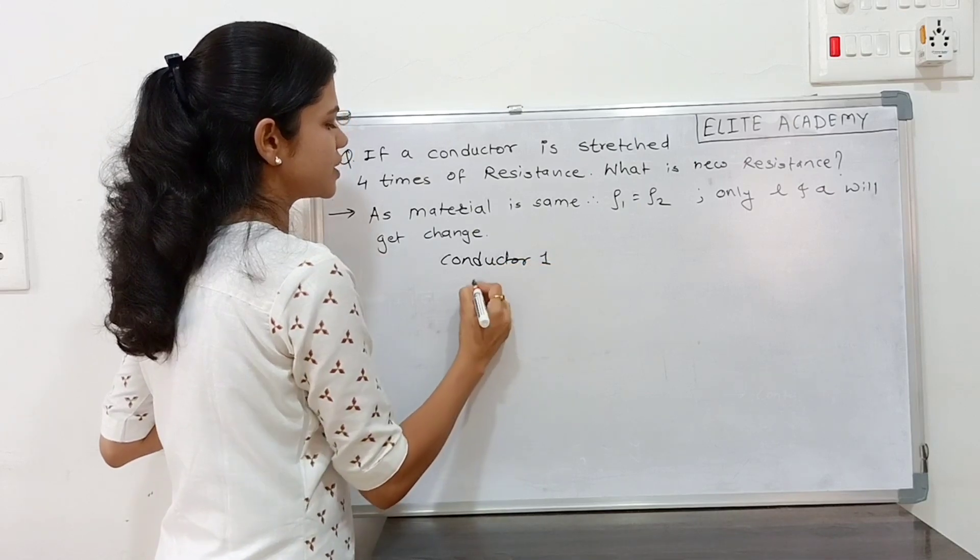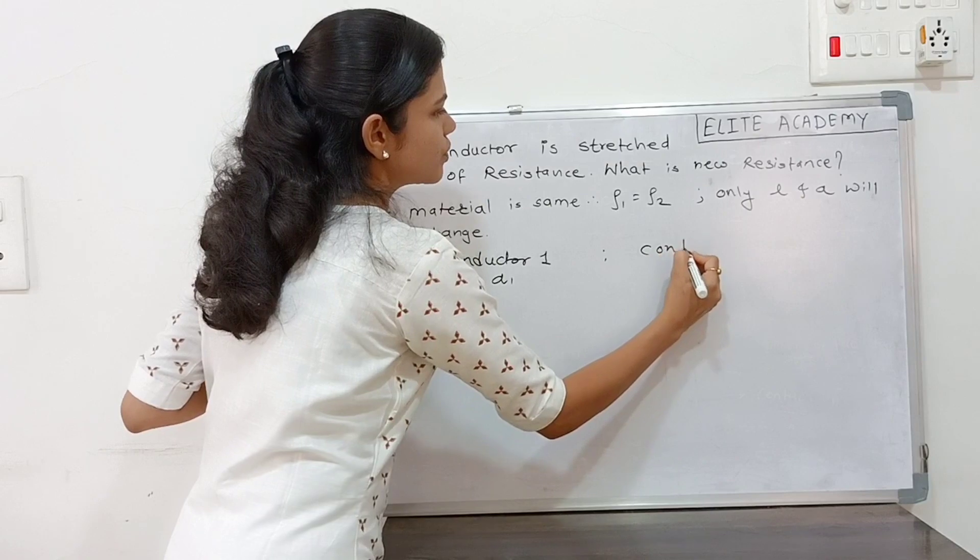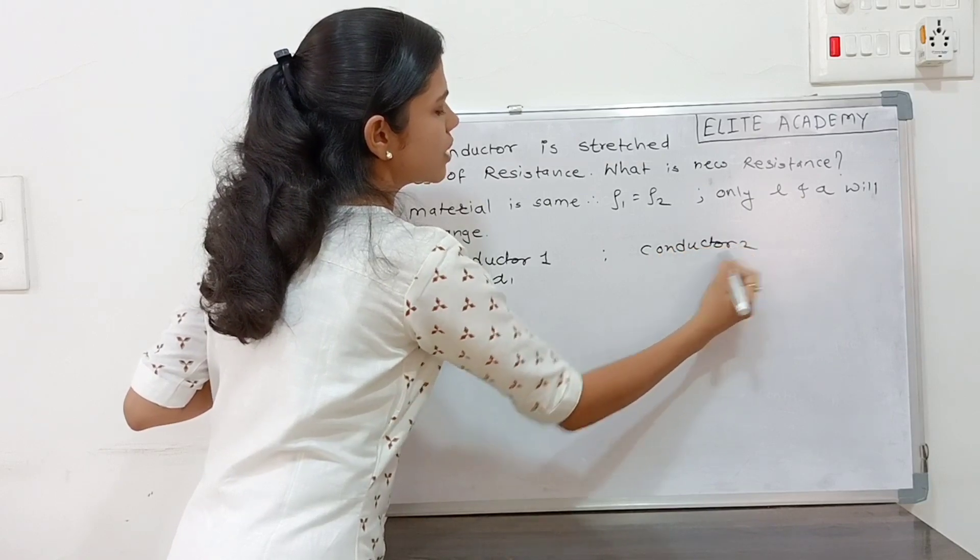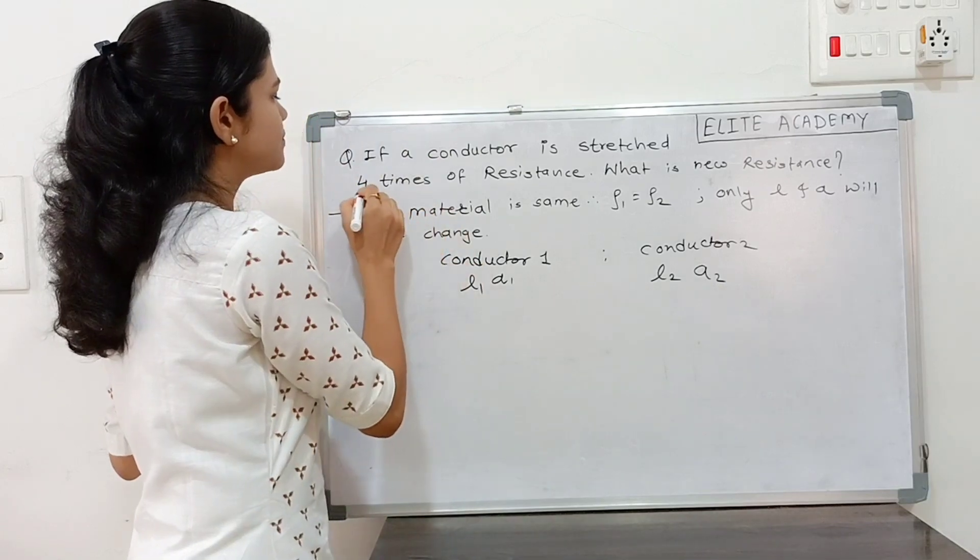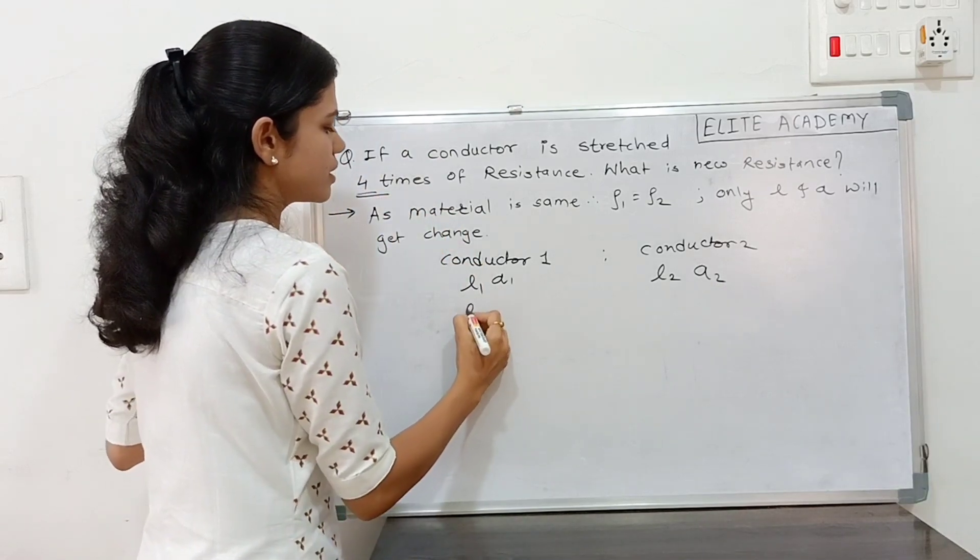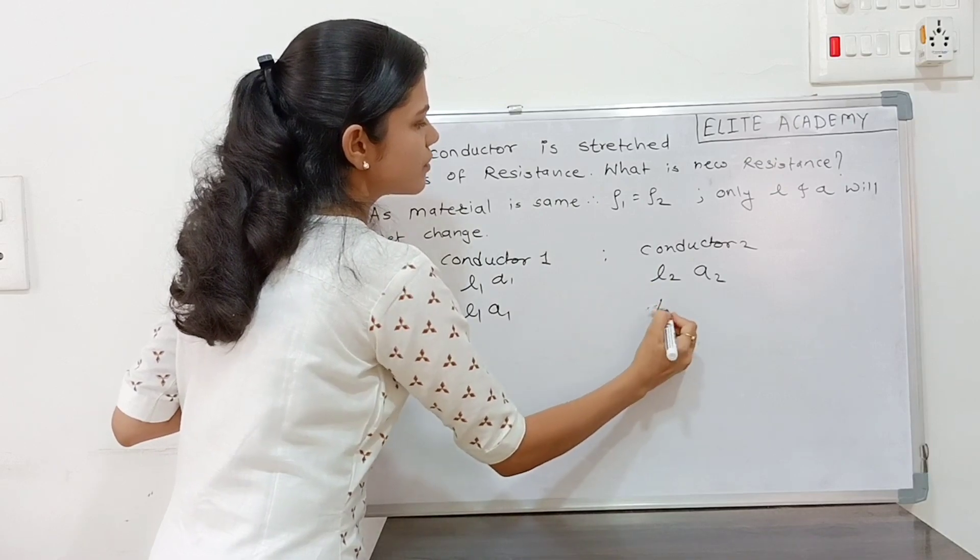In first condition let's say L1, A1. And in conductor 2 let's say L2, A2. After stretching four times, the L2 becomes four times of resistance L1.